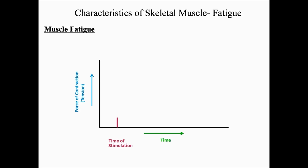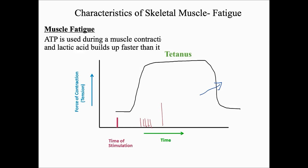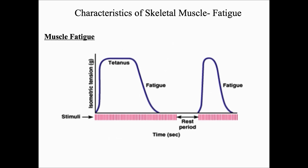During a muscle contraction, whether by increasing the frequency or strength of the stimulus, at some point the muscle will reach its maximum strength for contraction — we call this tetanus. Tetanus is the maximum force of a sustained contraction with no relaxation period. At some point the muscle contraction will rapidly decrease, which is known as muscle fatigue. During muscle fatigue, ATP is used faster than it can be produced, and lactic acid builds up faster than it can be removed.